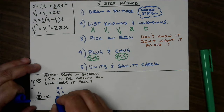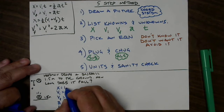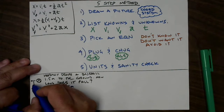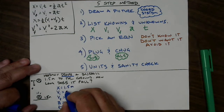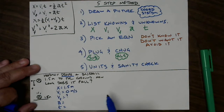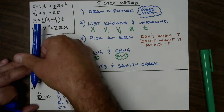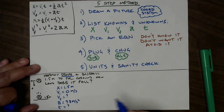Step two: list the knowns and unknowns. x = 1.5 m (final position, positive downward). vi = 0 m/s (it was dropped). vf = unknown (the ball is moving when it hits but we don't know the speed). a = +9.8 m/s² (positive because downward is positive). t = unknown. So we have two unknowns: vf and t.